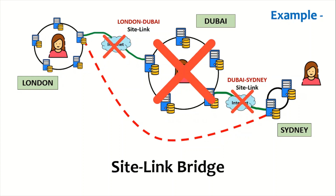As a good administrator, we create a site link bridge between the London office and the Sydney office. So even if the London-Dubai site link goes down, replication will happen over the site link bridge. Similarly, if the Dubai-Sydney site link goes down, or the entire Dubai office goes down, the site link bridge will handle replication between London and Sydney.